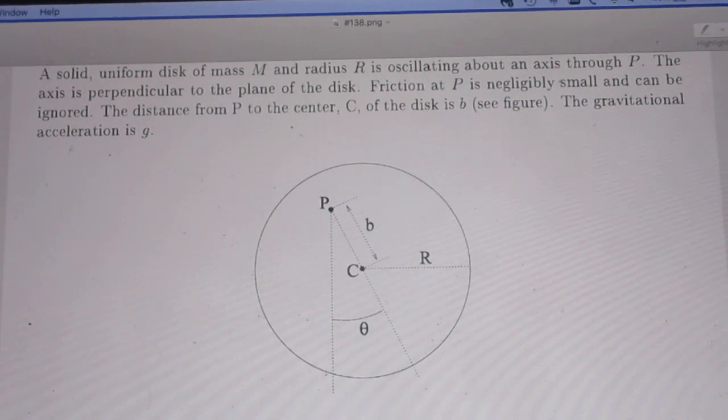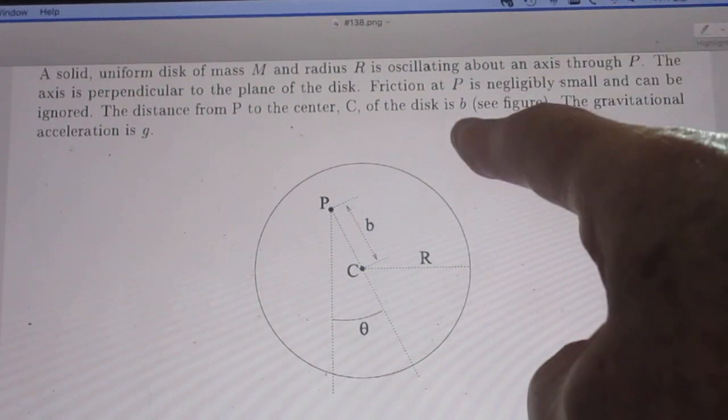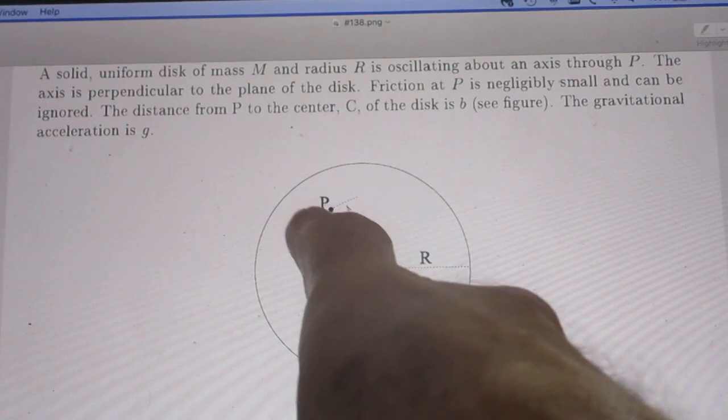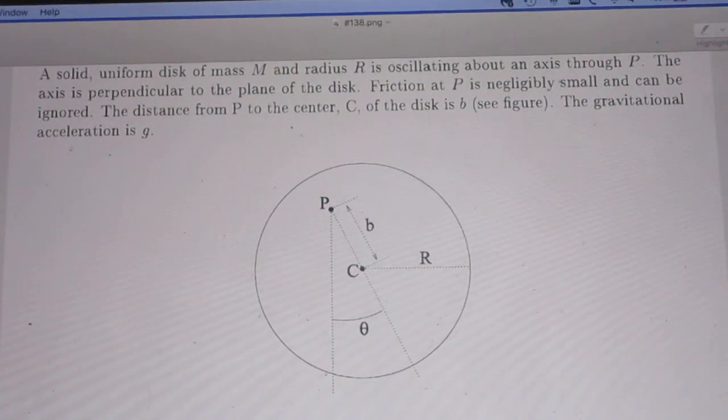The axis is perpendicular to the plane of the disc. Friction at P is negligibly small and can be ignored. The distance from P to the center C of the disc is b, small b. See the figure. So this distance is b. The gravitational acceleration is g.